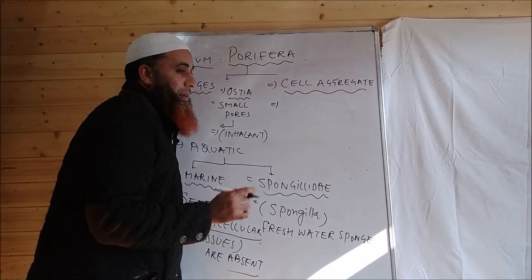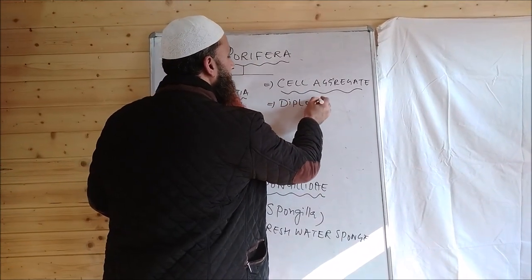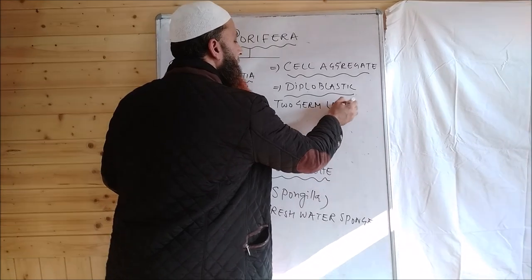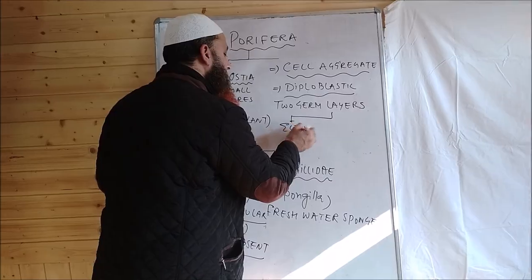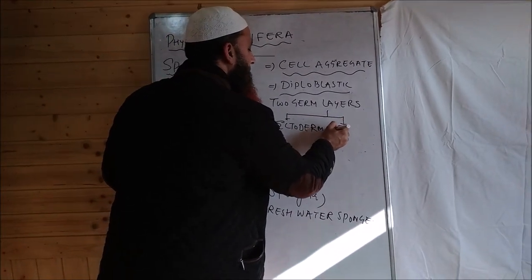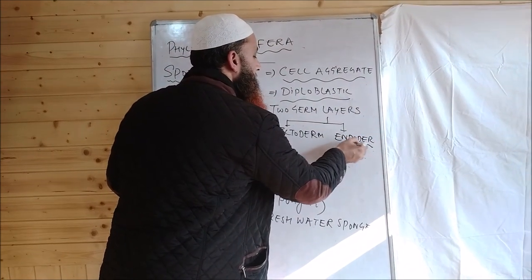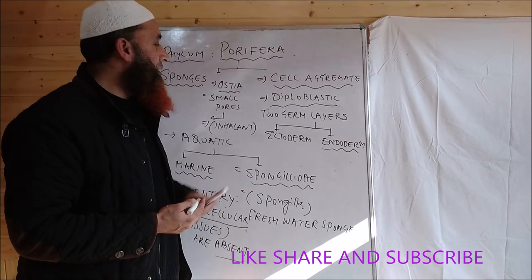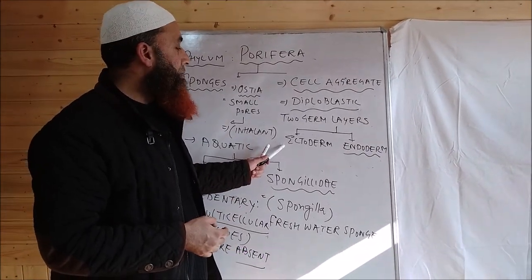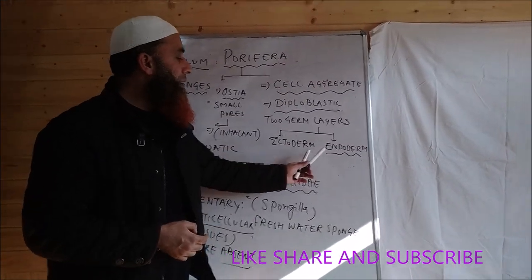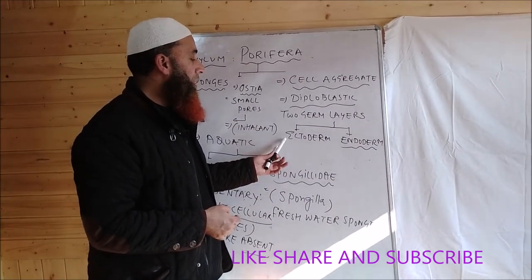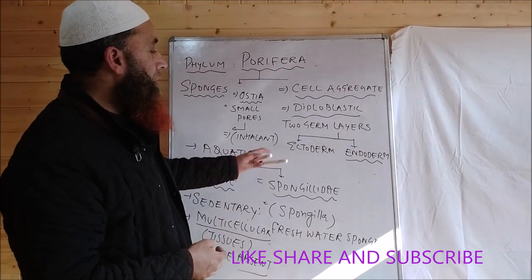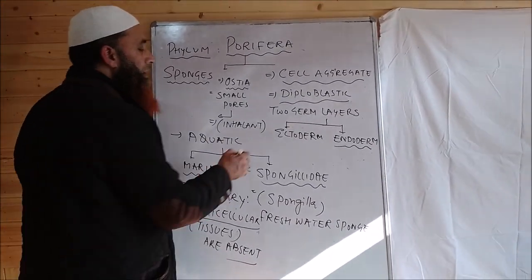The number of germ layers: these are diploblastic, having two germ layers — ectoderm and endoderm. Ectoderm is the outer germ layer and endoderm is the inner germ layer. Ectoderm gives rise to the outer part of their body wall and endoderm gives rise to the inner part. These are diploblastic animals and they are acoelomates.